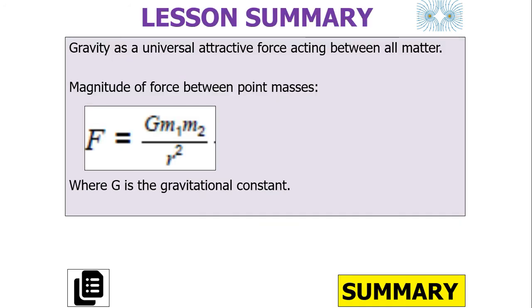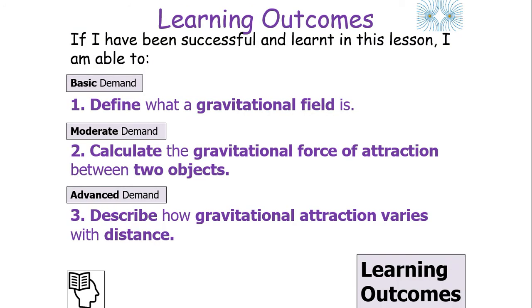To summarise: gravity is a universal attractive force acting between all matter, and the magnitude of the force between point masses is F = GM₁M₂/R², where G is the gravitational constant. In today's lesson we defined what a gravitational field is, calculated the gravitational force of attraction between two objects, and described how gravitational attraction varies with distance. I hope you've enjoyed this lesson on gravitational fields and Newton's law of attraction. Have a lovely day.